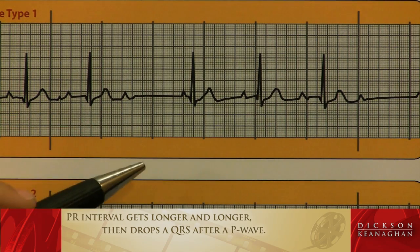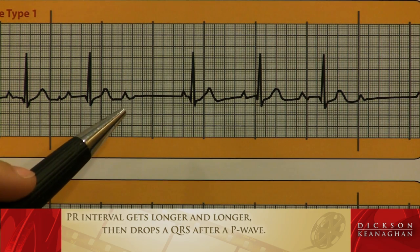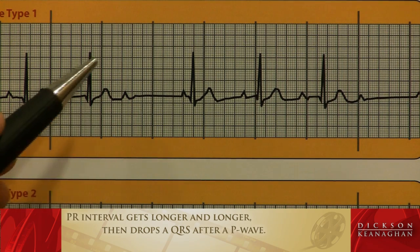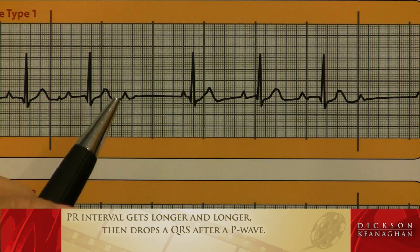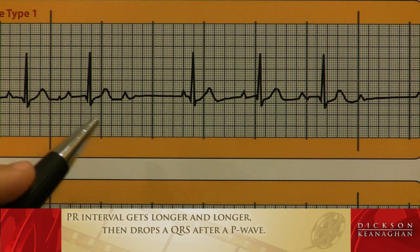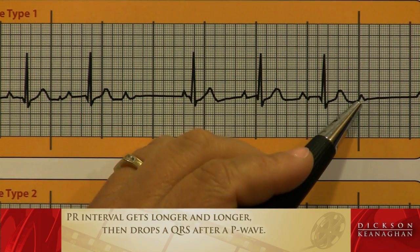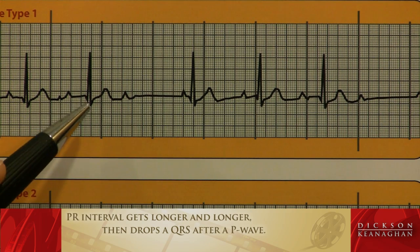We still want to count our atrial rate and ventricular rate. In the first degree heart block, the atrial and ventricular rate were the same. In the remaining three heart blocks, there will be more P's than Q's — that's helpful in identifying a heart block. Counting the ventricular rate in the six-second strip: one, two, three, four — the ventricular rate is 40, which is certainly a bradycardia. The atrial rate: one, two, three, four, five — the atrial rate is 50. So there are more P's than Q's. Ventricular rate 40, atrial rate 50 — I know it's a heart block.